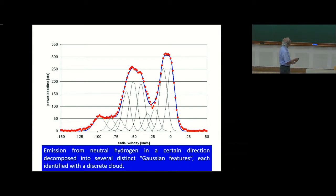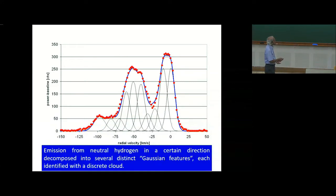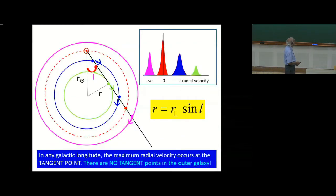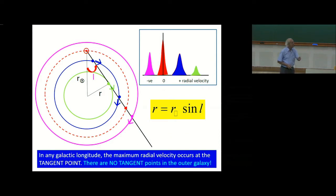What an astronomer actually measures in some given direction is the intensity of the hydrogen emission plotted as a function of the radial velocity with respect to the local standard of rest. What you find is a curve that can be fit with Gaussians, to see how many discrete features it can be broken up into. These discrete features are identified with individual hydrogen clouds at different distances. After modeling, the observations can be broken up into primarily four Gaussians — purple, red, blue, and green — at different radial velocities.